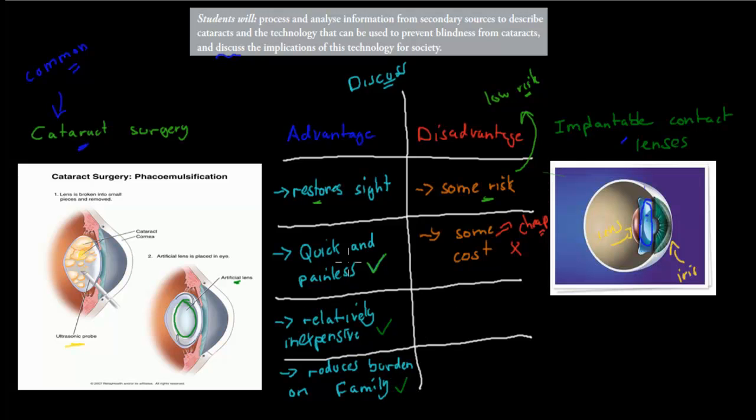There's more advantages than disadvantages. I think that's the conclusion you should draw, is that overall this surgery is very, very good for society. Even though there are some disadvantages, some risks and some costs, overall there's much more good about these surgeries than there is bad. This second part is you need to be able to describe cataract surgery quickly, or implantable contact lenses, whatever one you choose. The discuss part means you need to talk about advantages and disadvantages of this technology for society. But the conclusion you should draw is that overall, it's a very good surgery. It's very common because it's very useful. Whilst there are some risks, the benefits outweigh the risks.